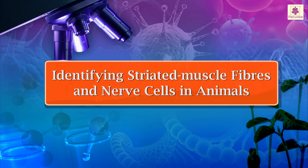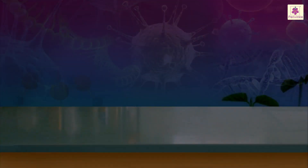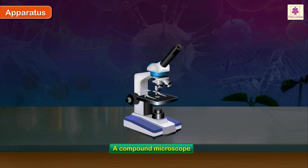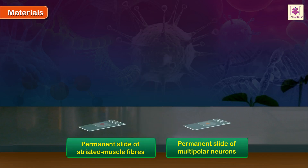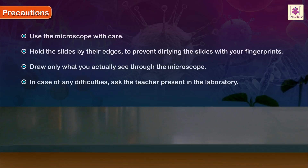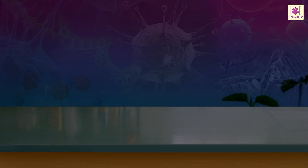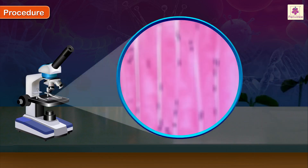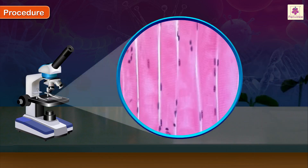Aim: to identify striated muscle fibers and nerve cells in animals from prepared permanent slides and to draw their labeled diagrams. Procedure: examine each slide under the microscope, first under low magnification and then under high magnification. Note down the characteristic features of each type of tissue.